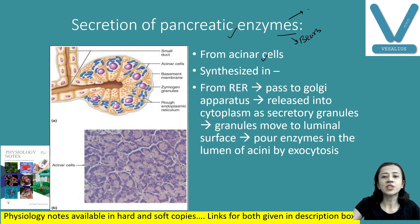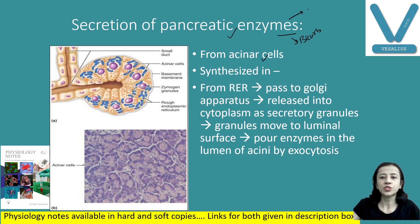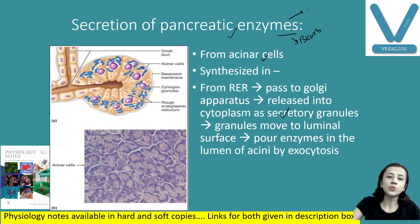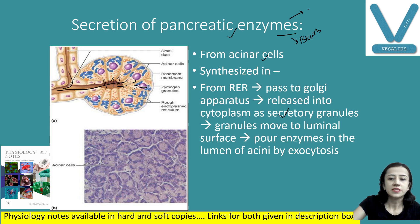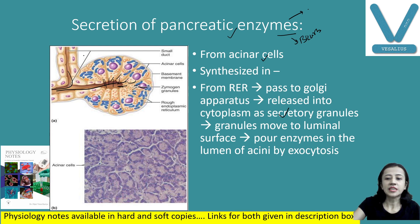From the secretory vesicles, they pass to the Golgi apparatus where they get processed and packaged and stored as secretory granules. These granules move towards the luminal surface, and the enzymes enter the lumen of the acinar cell by exocytosis. After passing through the duct, the secretion drains into the second part of the duodenum.